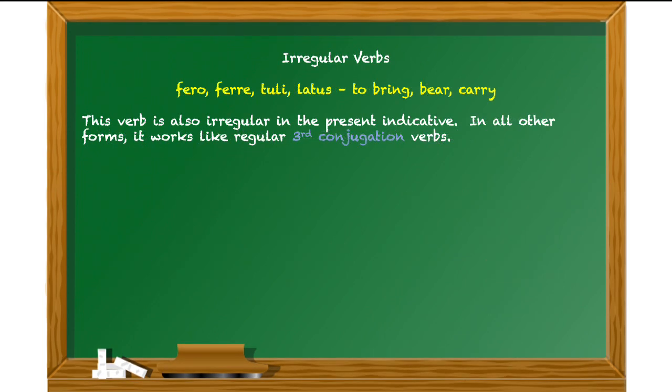And the last verb that we've got to look at is very, very common. The others are common as well. But certainly fero is very, very common and compounds of it. Fero, ferre, tuli, latus. To bring, to bear, or to carry. And again, in the dictionary entries, you can see how irregular those forms are. This one is irregular, really just in the present indicative. In all other forms, including the present subjunctive, it's going to follow the pattern of third conjugation verbs.